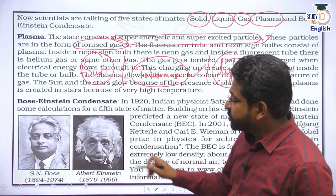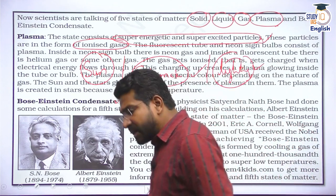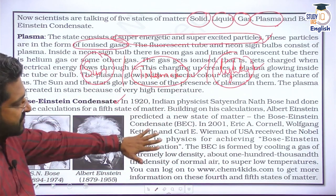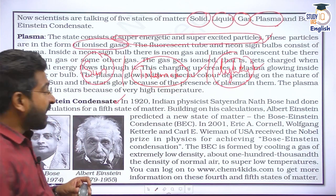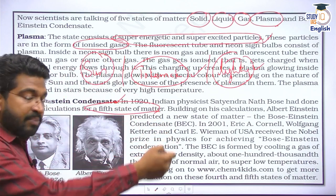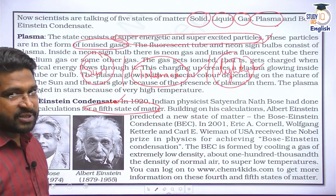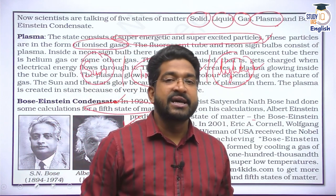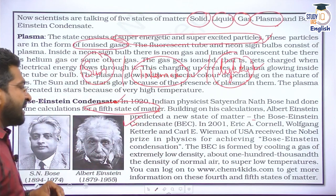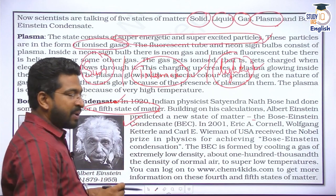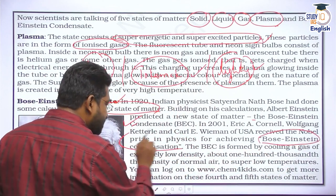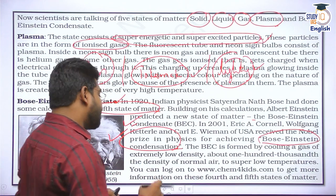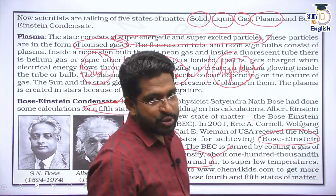There is also a fifth state of matter called Bose-Einstein condensate. Indian physicist Satyendranath Bose (SN Bose) did a lot of calculation regarding the fifth state of matter, and his work was further built upon by Albert Einstein — that is why it is called Bose-Einstein condensate. It was eventually proved in 2001, and scientists Eric Cornell, Wolfgang Ketterle, and Carl E. Wieman received the Nobel Prize for proving its existence. It is formed by cooling a gas to extremely low density — about one hundred thousandths of the density of normal air.